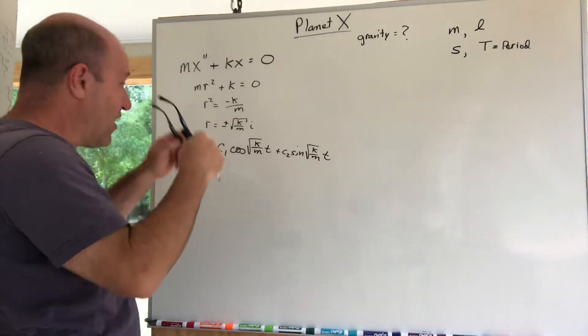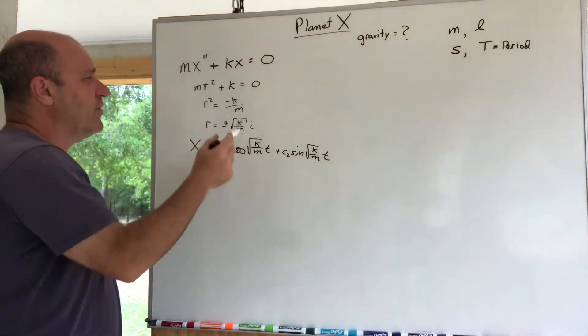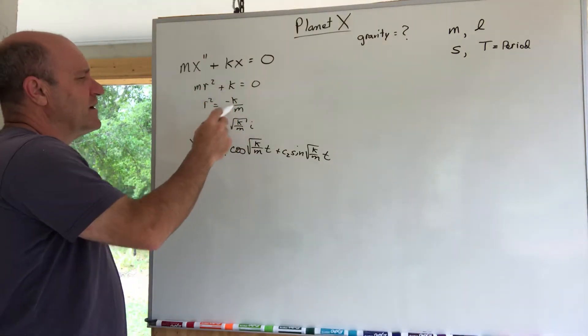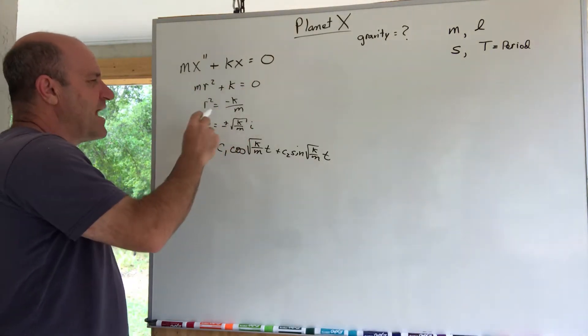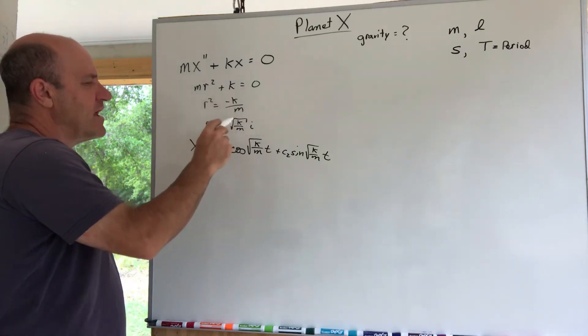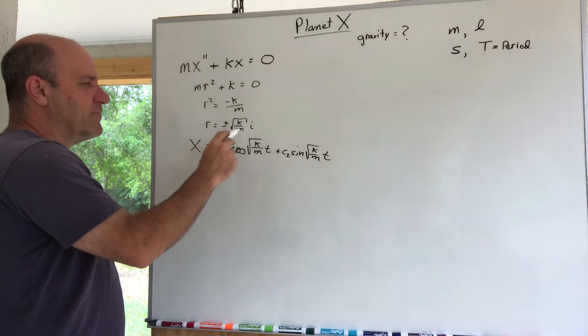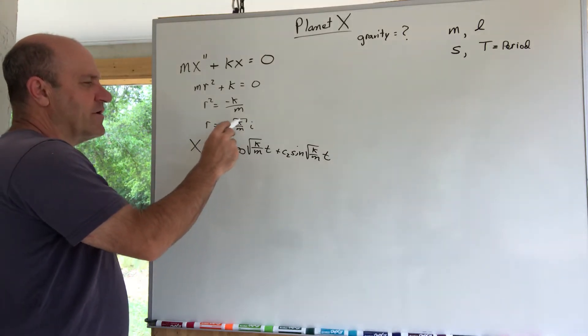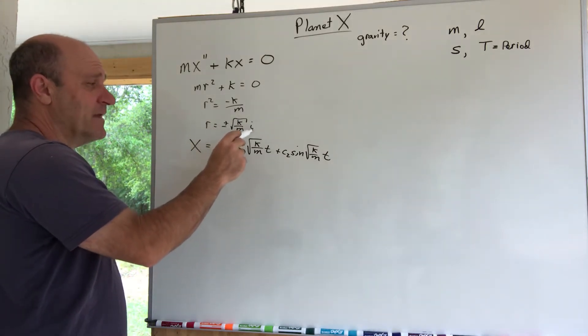So we've done plenty of simple harmonic motion problems, but when you do it in general you get mr² + K. You move the, you do the algebra, you find the roots, you get this -K/m, you take the square root so you get this negative plus or minus square root of K/m times i.